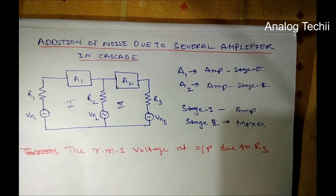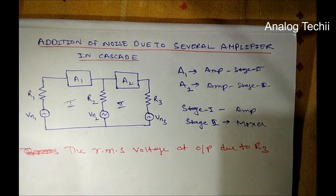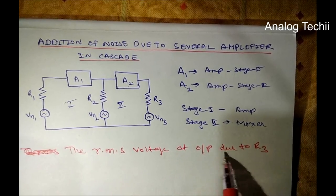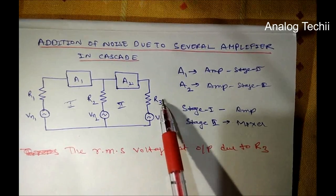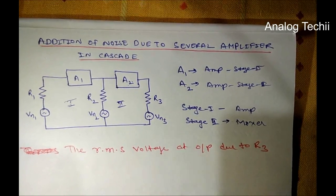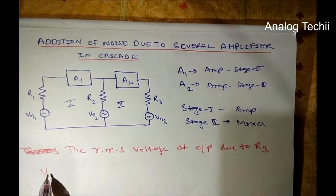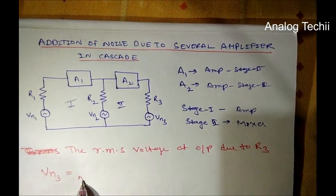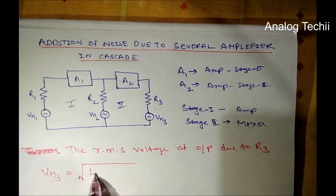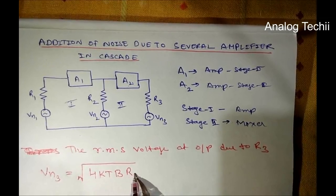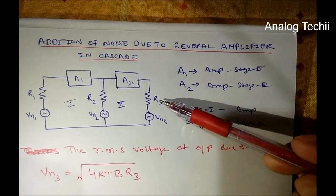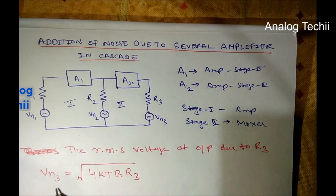Now, the RMS voltage — that is, root mean square voltage — is at the output due to resistance R3. You can see here R3, and the noise voltage corresponding to R3 is represented by VN3. We know from the formula that VN3 is given as √(4KTBR3), since this is generated due to resistance R3.